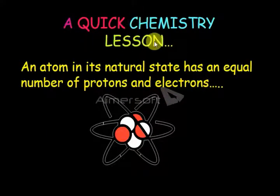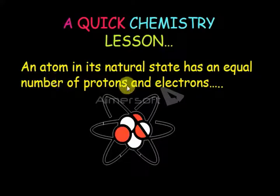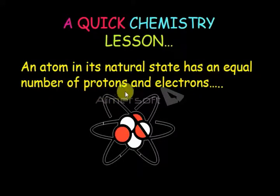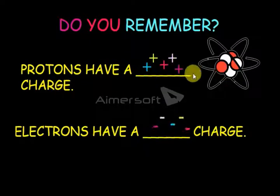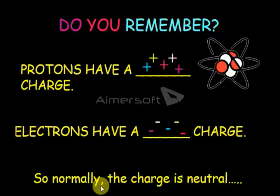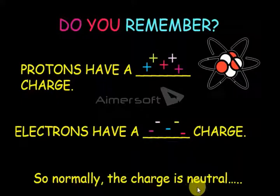A quick chemistry review: an atom in its natural state has an equal number of protons and electrons. Do you remember — protons have a positive charge and electrons have a negative charge. So normally the charge is neutral.